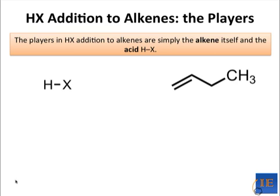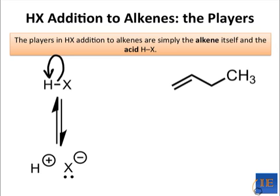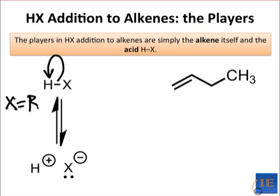You should remember from our discussion of acid-base chemistry that acids are fond of releasing H-plus ions, or protons. We can draw a curved arrow to illustrate this process. This leaves behind an X-minus anion, which, if the acid is very strong, is relatively stable. The most common acids used in addition reactions are hydrobromic acid (HBr) and hydrochloric acid (HCl). Notice that the X-minus anions corresponding to these compounds — Br-minus and Cl-minus — are both relatively stable thanks to the high electronegativity of the halogen atoms.